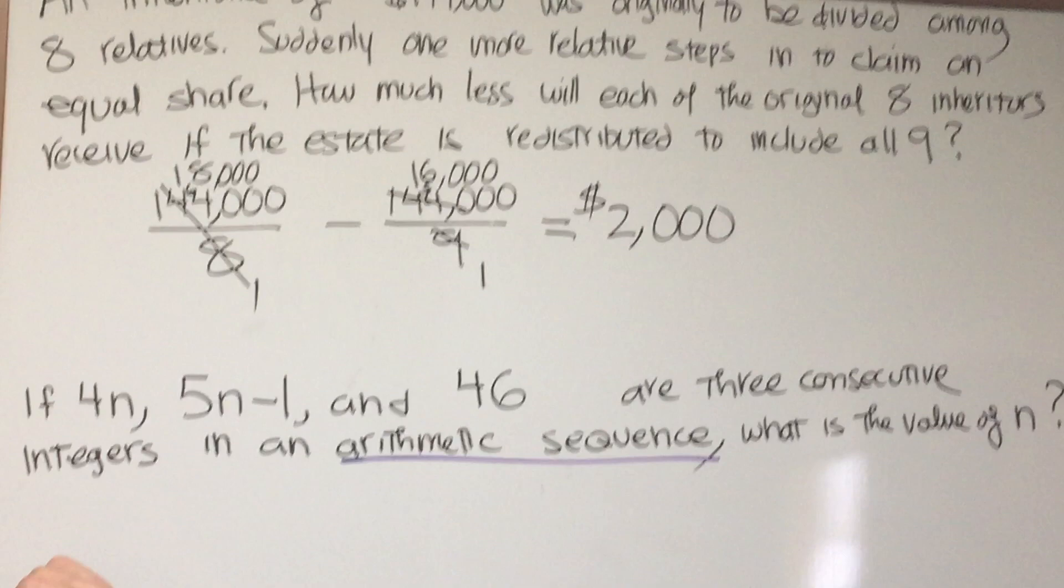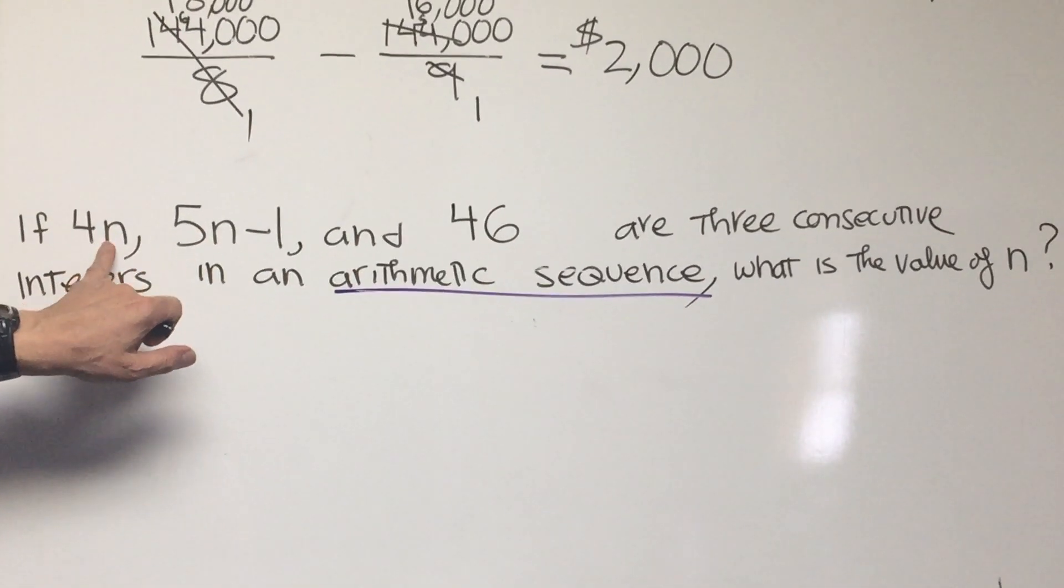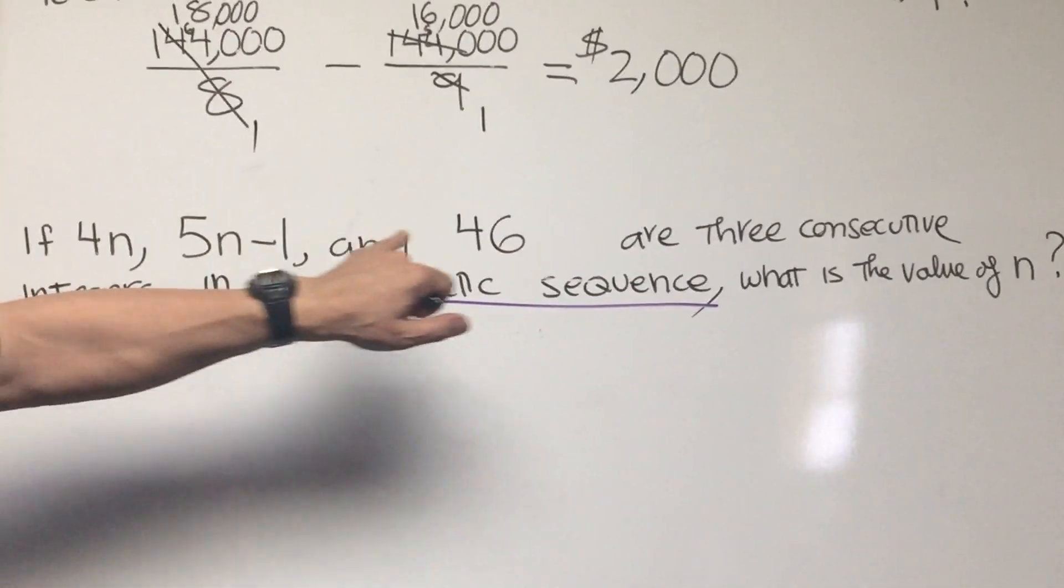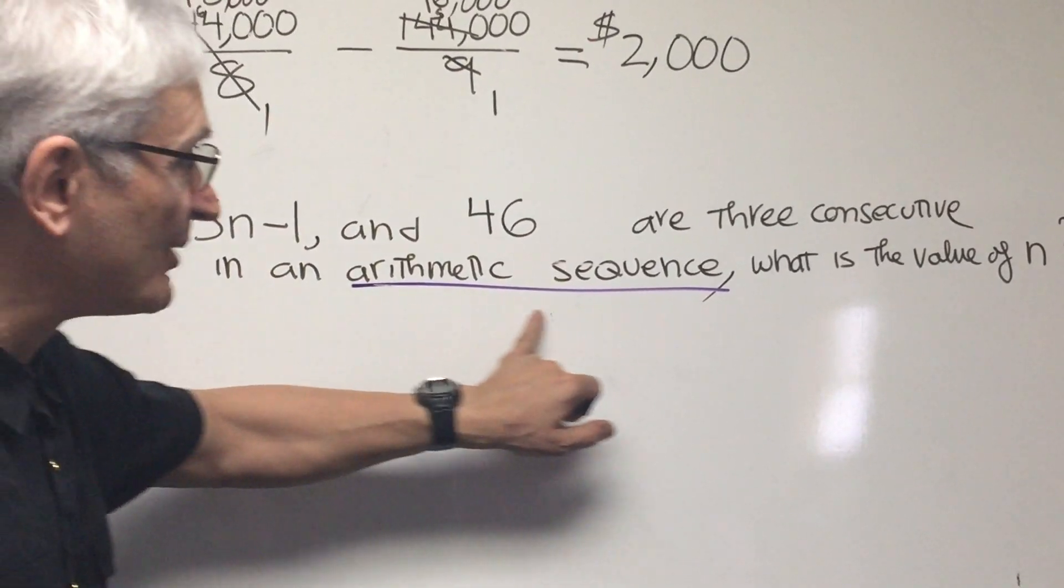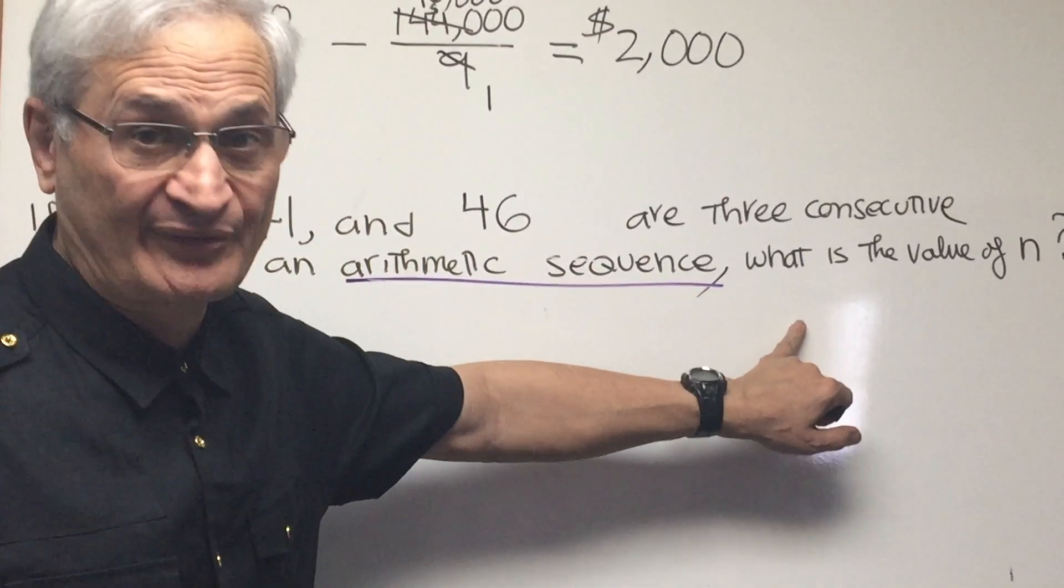Okay, next problem. If 4n, 5n minus 1, and 46 are three consecutive integers in an arithmetic sequence, what is the value of n?